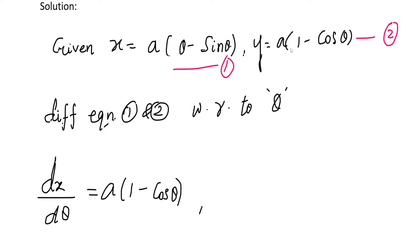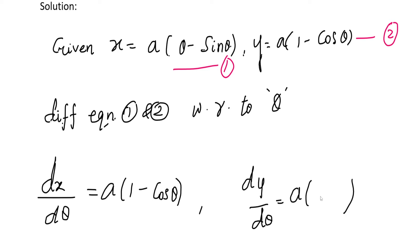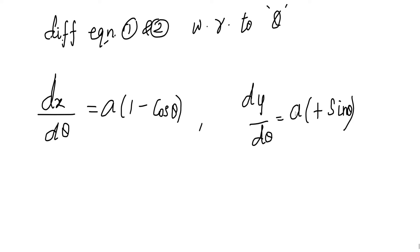For the second equation, y = a(1 − cos θ), differentiating with respect to θ: dy/dθ = a · sin θ. Here 1 is constant so its derivative is 0, and the derivative of −cos θ is +sin θ, giving dy/dθ = a sin θ.